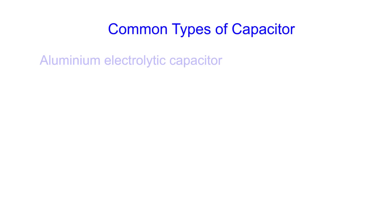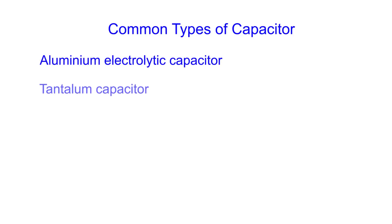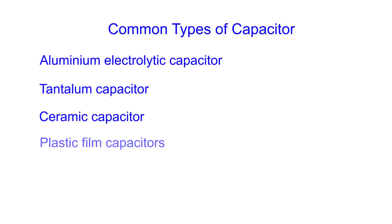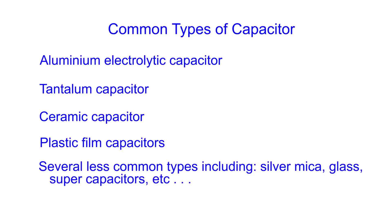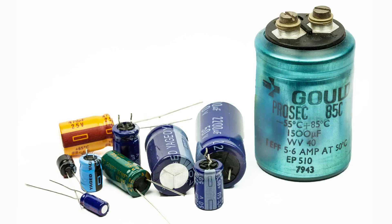There are a number of types of capacitor that are more common than others. Possibly the most common are the aluminium electrolytic, tantalum, ceramic, and finally plastic film capacitors. Beyond these, there are several other types like silver mica, glass, supercapacitors, and some others, but these aren't nearly so common, so we won't be covering them in this video.